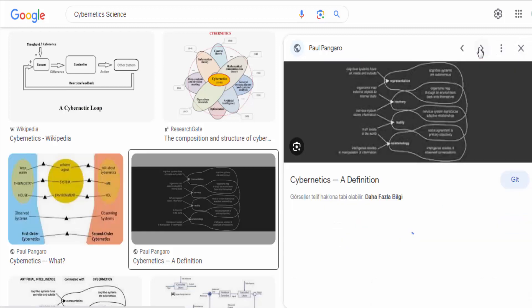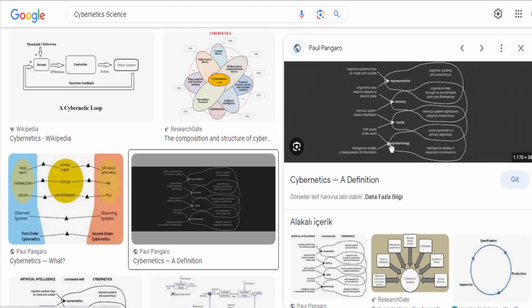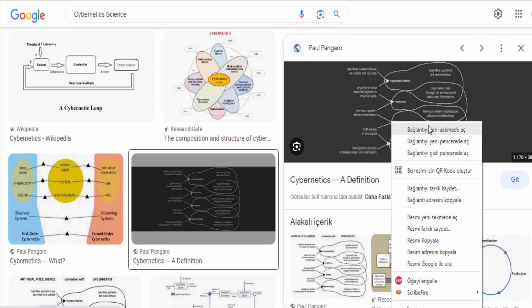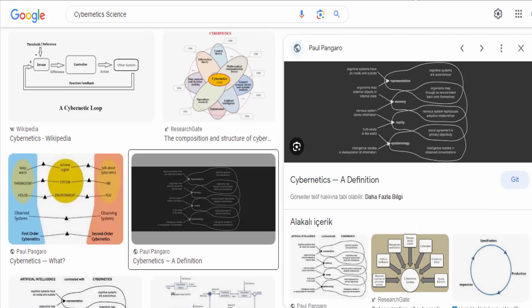It was first introduced by the mathematician Norbert Wiener in his book Cybernetics, or Control and Communication in the Animal and the Machine, published in 1948.